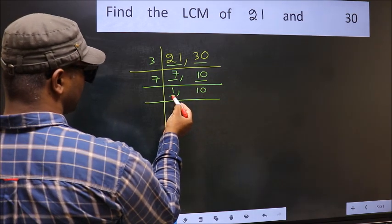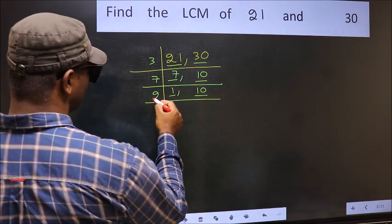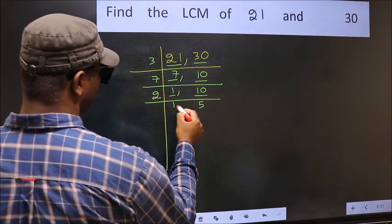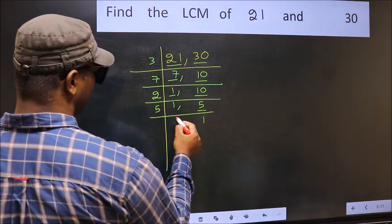Now, we got 1 here. So, focus on the next number, 10. 10 is 2 times 5 equals 10. Now, here we have 5. 5 is a prime number, so 5 times 1 equals 5.